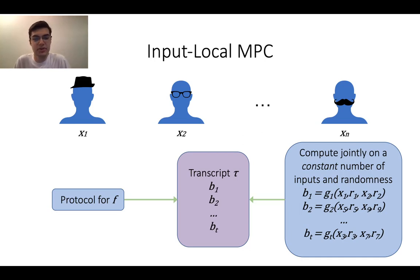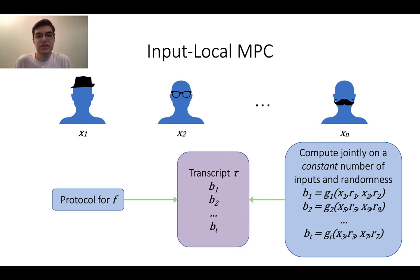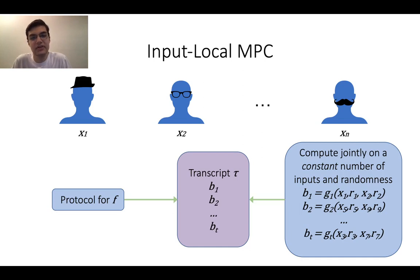If input local MPC were possible, we could build a combiner-friendly homomorphic secret sharing scheme by having the function f_{1,2} — which computes on x1 and x2 — generate all bits of an MPC transcript that depend only on those two parties, and similarly for the other function shares. Given all the function evaluations, you would have the entire MPC transcript, and then use it to recover f(x).